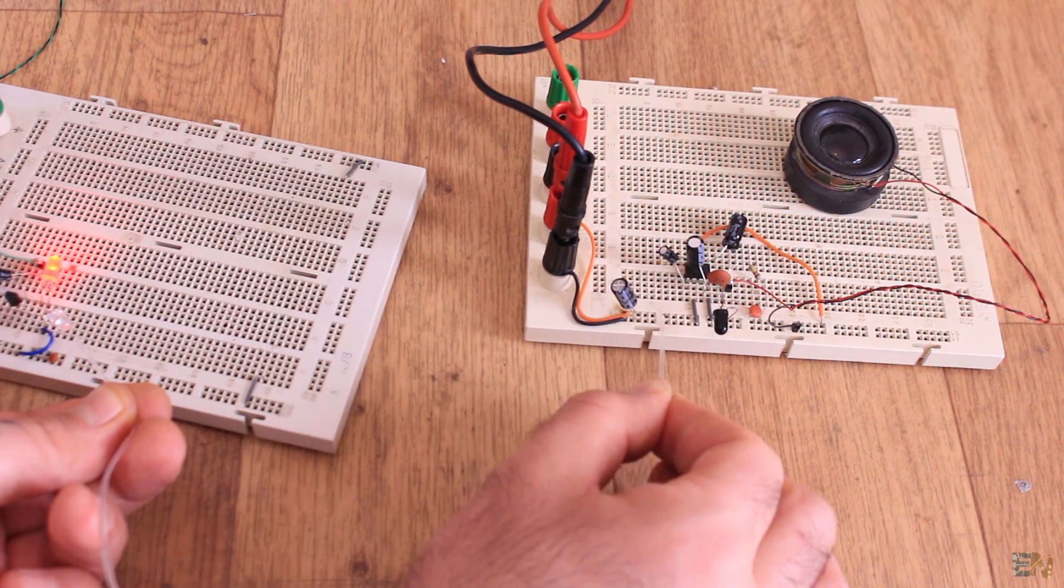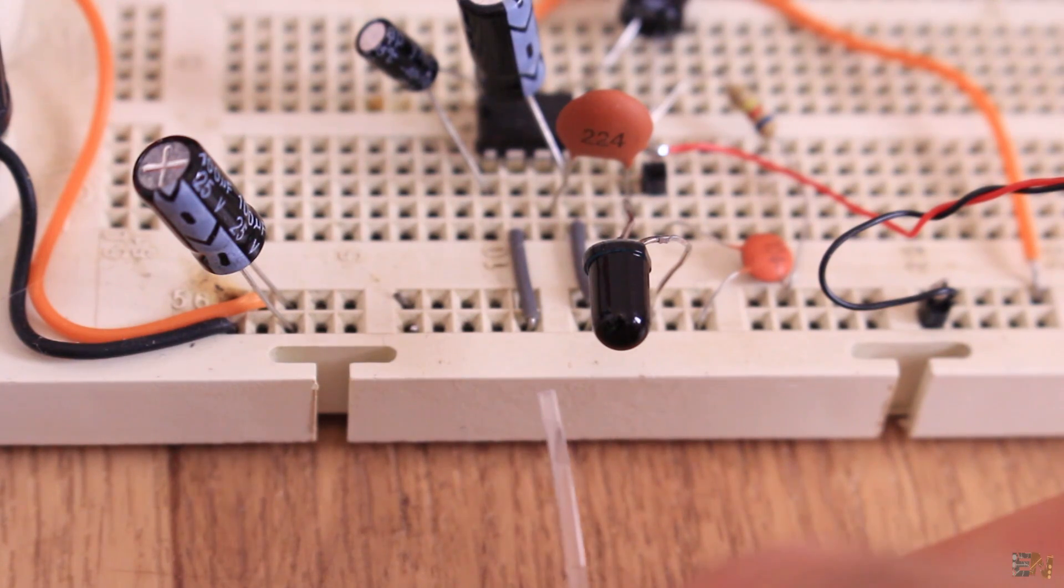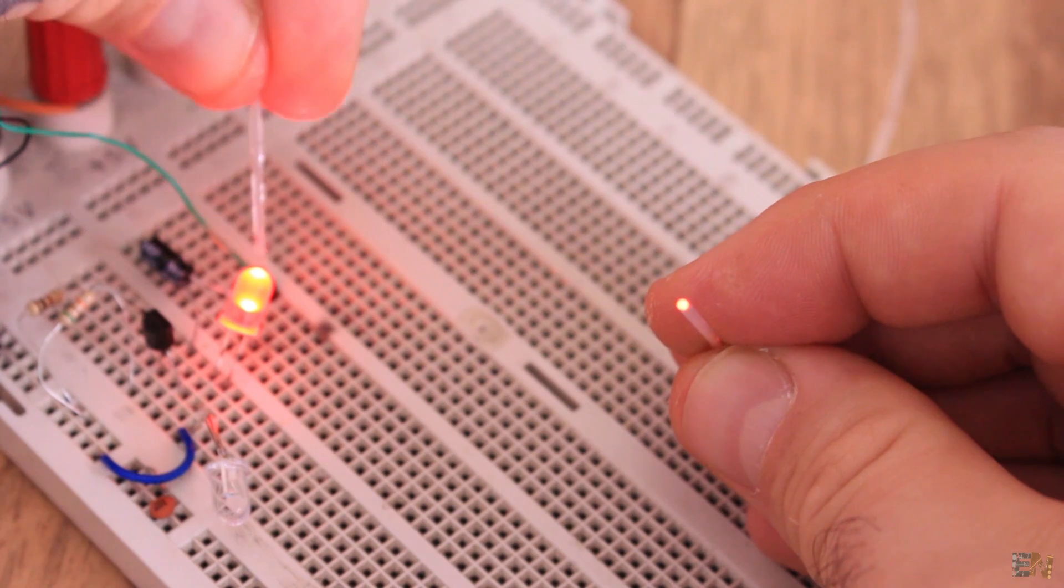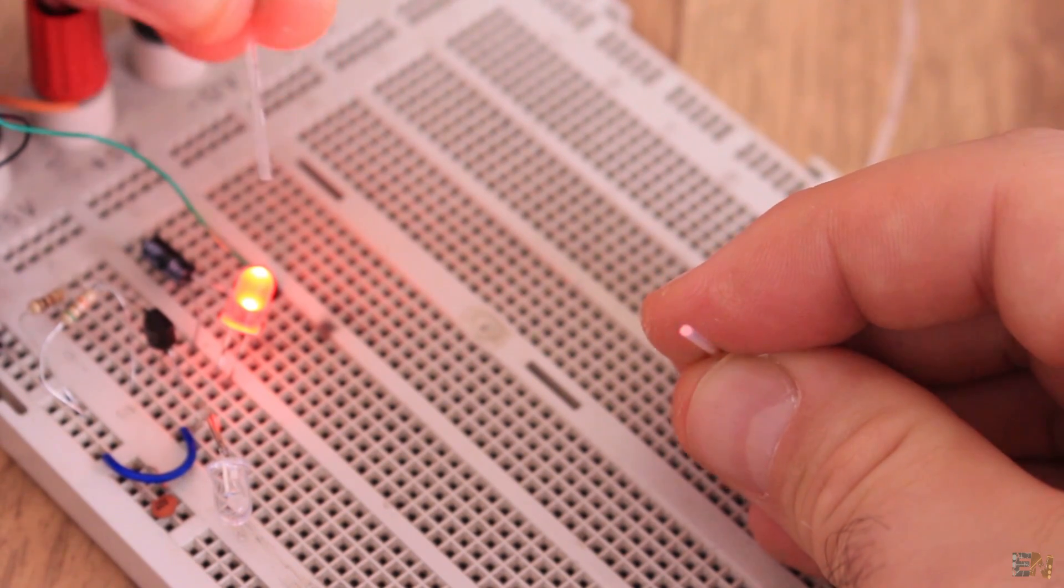Of course, with infrared light we can't see anything. But look, I now use this fiber with a visible light, so we can see how the light is traveling through the fiber.